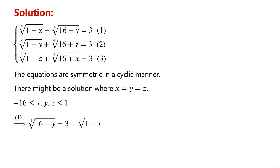Rearrange equation 1. We have the fourth root of 16 plus y equals 3 minus the fourth root of 1 minus x. Raise the equation to the power of 4 and then rearrange. We have y equals (3 minus the fourth root of 1 minus x) all to the power of 4, minus 16.